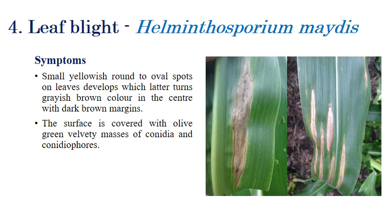Coming to the fourth disease — leaf blight, caused by Helminthosporium maydis. It was one of the most devastating epidemics in central America and the USA in the 1970s, because of the male-sterile cytoplasm present in maize at that time. The entire crop consisted of the same male-sterile cytoplasm, and due to that the pathogen Helminthosporium maydis — causing southern corn leaf blight — devastated the crop. The symptoms of southern corn leaf blight and northern corn leaf blight are more or less similar.